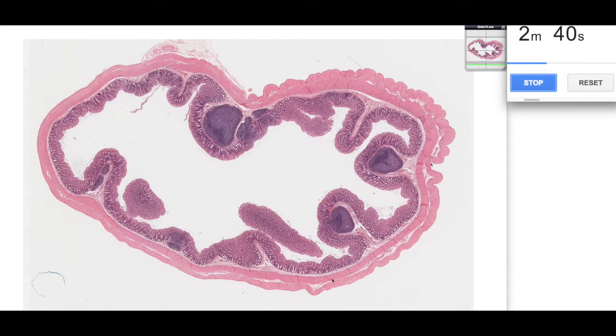Now in humans, the outer longitudinal layer of the muscularis is arranged into three bands called tinea coli. So they'd be sort of large extensions associated with the outside layer of the muscle. We don't see that, so this is from a non-human mammal.